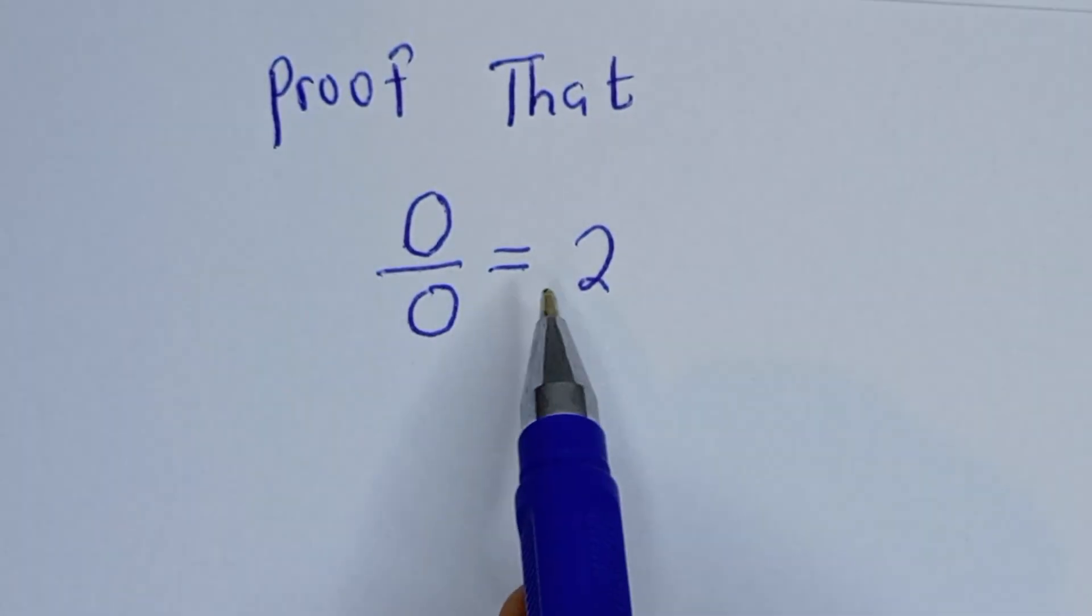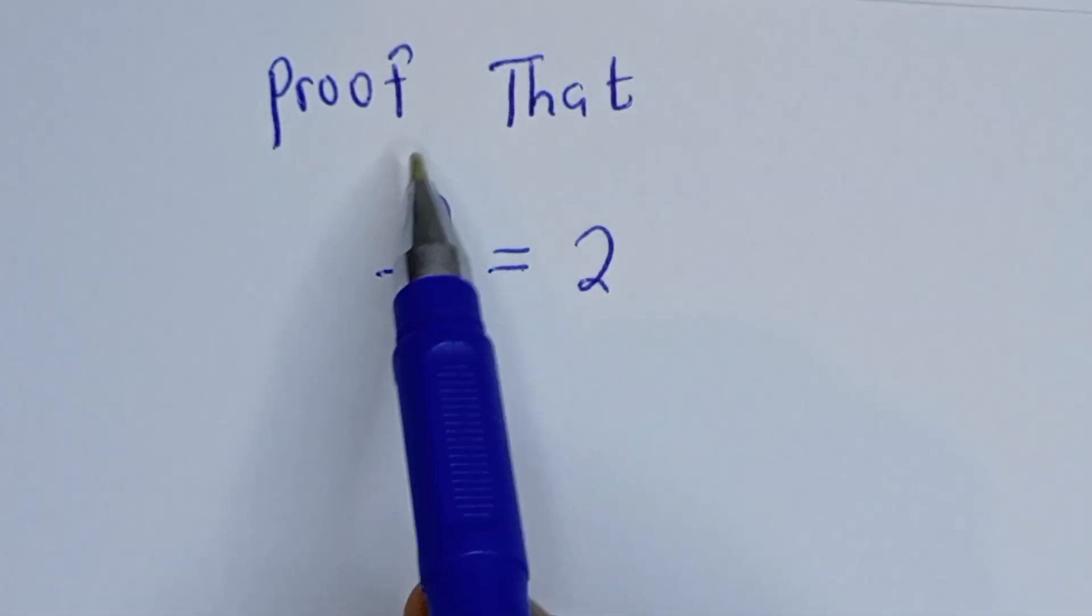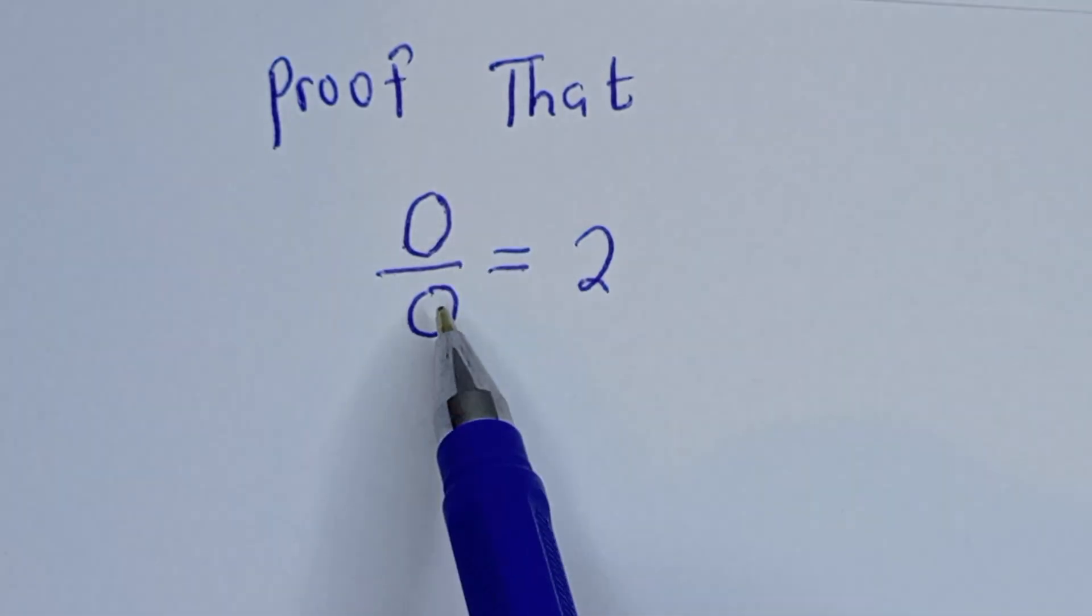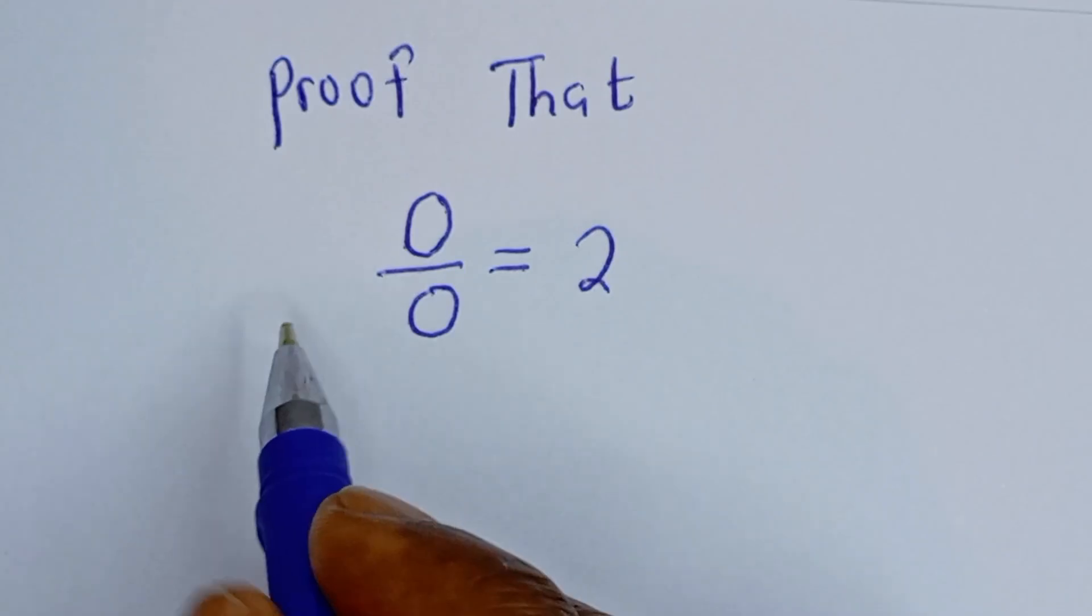0 divided by 0 is equal to 2. Hi everyone, today we want to prove that 0 divided by 0 is equal to 2. From this form of mathematics, take note of this.